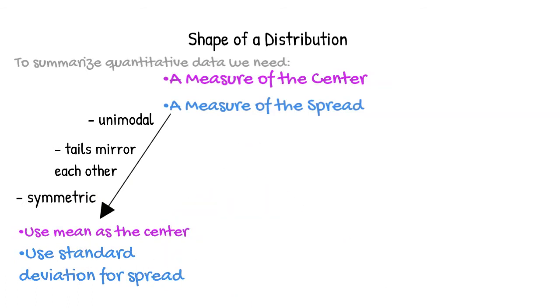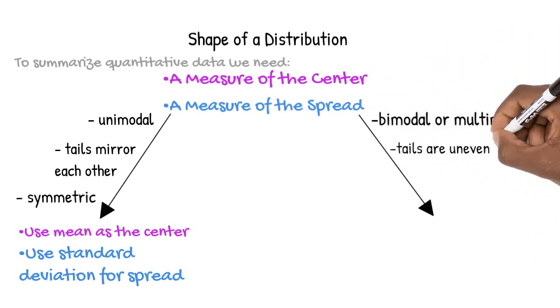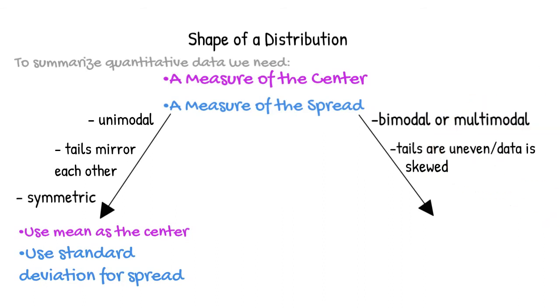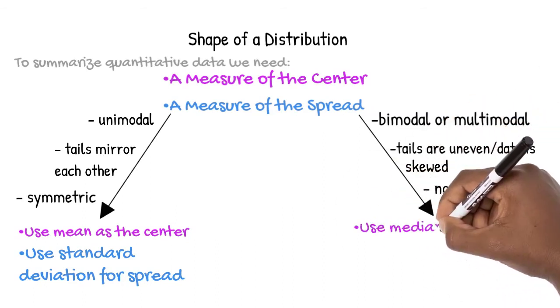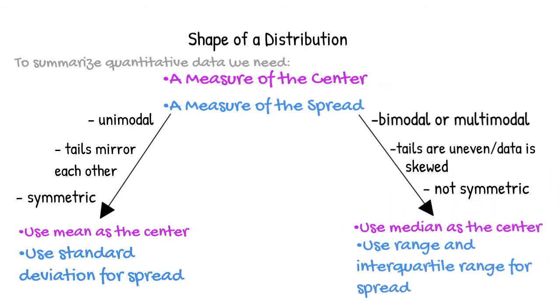If, however, any of these conditions fail—for example, the data is bimodal or multimodal, the tails are uneven, or the data is skewed and the display is not symmetric—we use median as a center and the range and interquartile range to describe the spread.